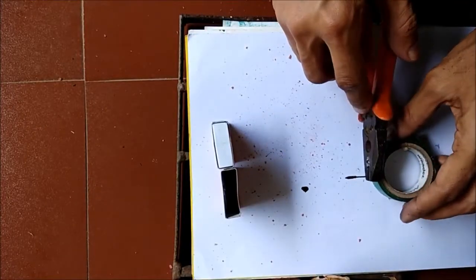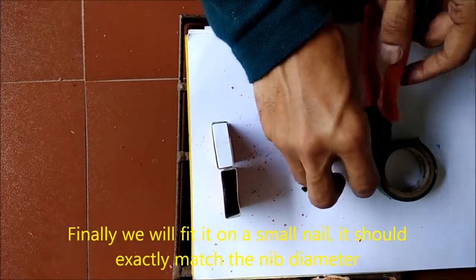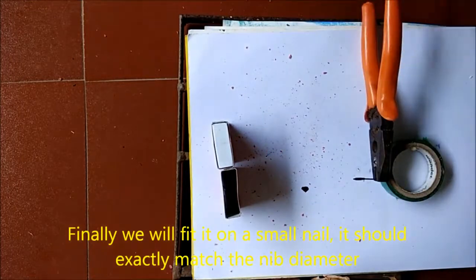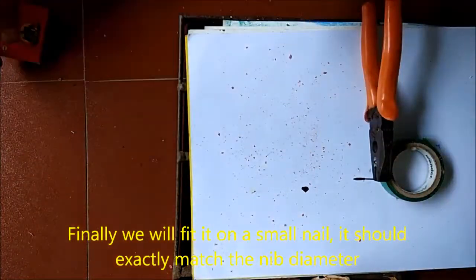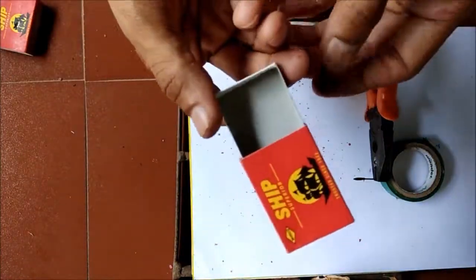Finally, we will find and fit it on a small nail. It should exactly match the nib diameter. These empty boxes will act like our targets.